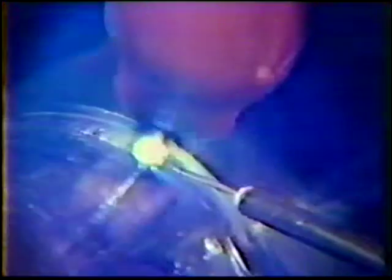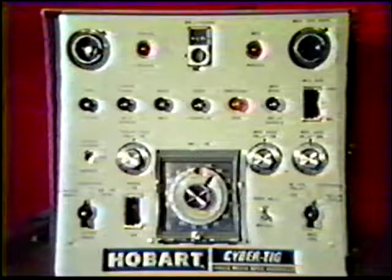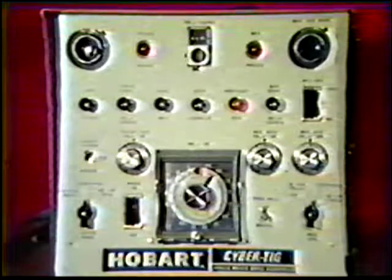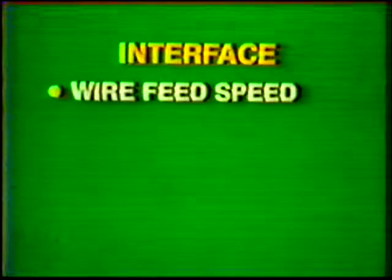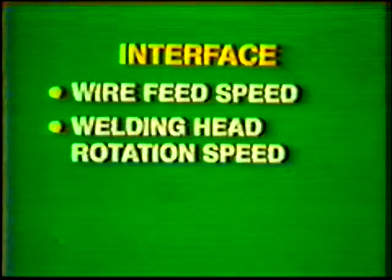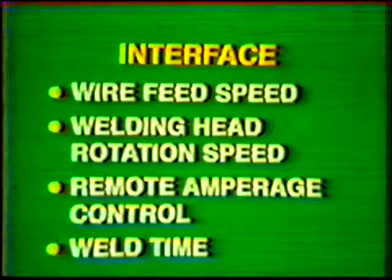For upslope and downslope, use of pulsed current is optional. The interface control, which is also called the motor speed control, provides control of the wire feed speed, welding head rotation speed, remote amperage control, and weld time.